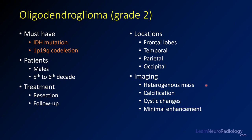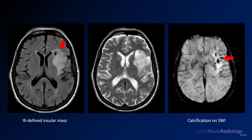On imaging, you'll often see a heterogeneous, ill-defined mass. You can have calcification and cystic changes. For a grade 2 lesion particularly, you tend to have minimal enhancement. For a grade 3 or anaplastic oligodendroglioma, you may have more enhancement.